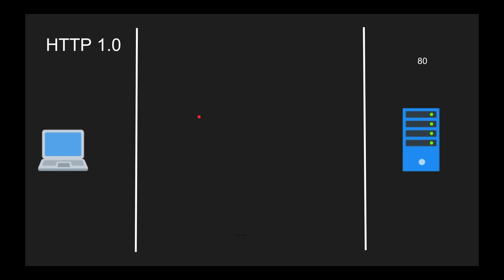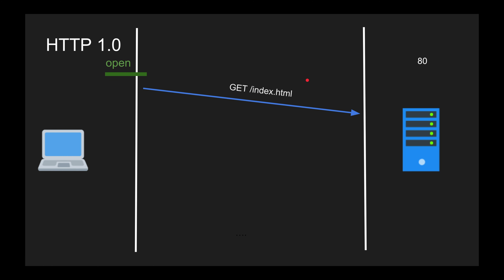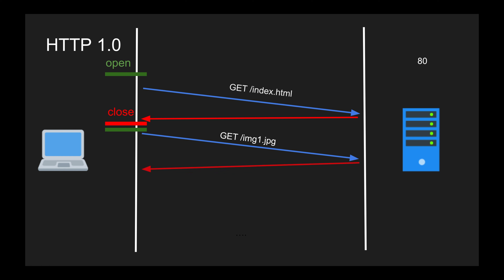The first thing I'll discuss is HTTP 1.0, back in the 90s — way back, 1995. We invented the HTTP protocol and said: to send a GET request, I'll establish a TCP connection via three-way handshake between the client and the server, connect to port 80, send the GET request, wait for the result, then close the connection. And if I want to send another request, open another connection, send another GET request, wait for the result, and close the connection all over again.